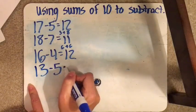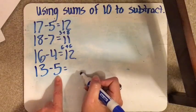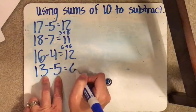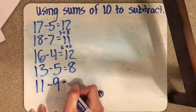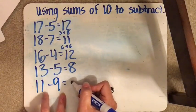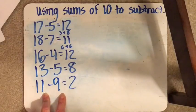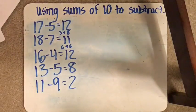13 minus 5. So we're going to do 5 plus 5 is going to get us to 10. And another 3 is 8. So see, I'm just putting this in my head now. 11 minus 9. 9 plus 1 gets us to 10 plus 1 more. So the answer is 2. And that was a fairly simple one. But hopefully you'll understand the strategy.